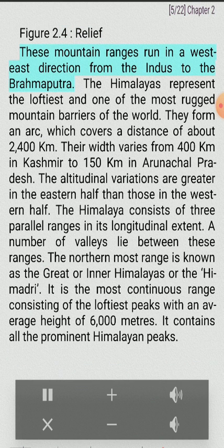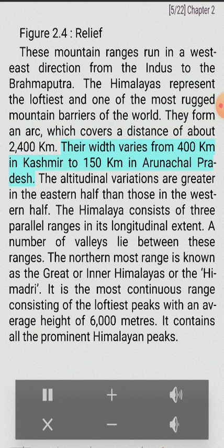These mountain ranges run in a west-east direction from the Indus to the Brahmaputra. The Himalayas represent the loftiest and one of the most rugged mountain barriers of the world. They form an arc covering a distance of about 2,400 kilometers. Their width varies from 400 kilometers in Kashmir to 150 kilometers in Arunachal Pradesh. The altitudinal variations are greater in the eastern half than in the western half. The Himalaya consists of three parallel ranges in its longitudinal extent, with a number of valleys lying between these ranges.